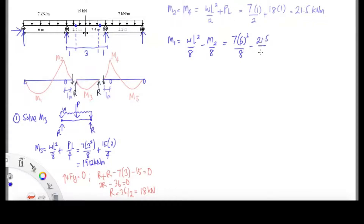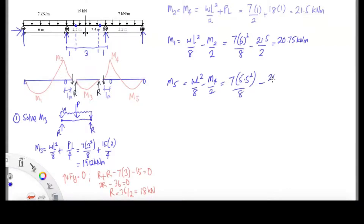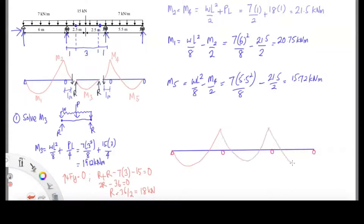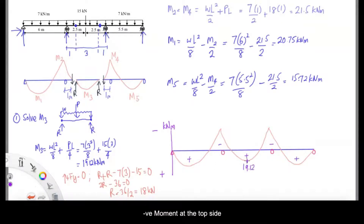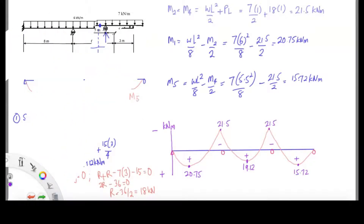The next step is calculating M1. M1 uses WL²/8 minus half of M2. The same applies for M5 — we use WL²/8 again but subtract half of M4. The difference with M5 is that the span is 5.5, not 6. After calculating all the moments, we just redraw the bending moment diagram with plus at the bottom and minus at the top, and put all the values in.